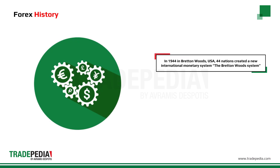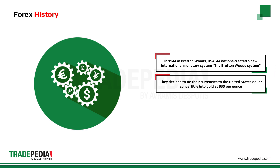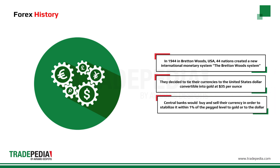In 1944 in Bretton Woods, New Hampshire, USA, 44 of the world's leading nations created a new international monetary system that became known as the Bretton Woods system. According to this new system, countries decided to tie their currencies to the United States dollar, convertible into gold at the price of $35 per ounce. Central banks would buy and sell their country's currency in order to stabilize it within 1% of the pegged level to gold or to the dollar.